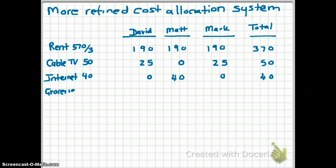Finally, they share the cost of groceries. David says, I don't want to pay for groceries because I eat every night at my girlfriend's place. Matt says, that's fine, however, Mark should pay for two people because Mark's girlfriend eats at their place every night. So as a result, David doesn't pay for groceries and Mark pays for two-thirds of the groceries and Matt pays for one-third of the groceries.